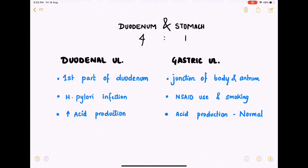Duodenal ulcer is very strongly associated with H. pylori infection. Gastric ulcer is also associated with H. pylori infection, but it is more strongly associated with NSAID use and smoking.